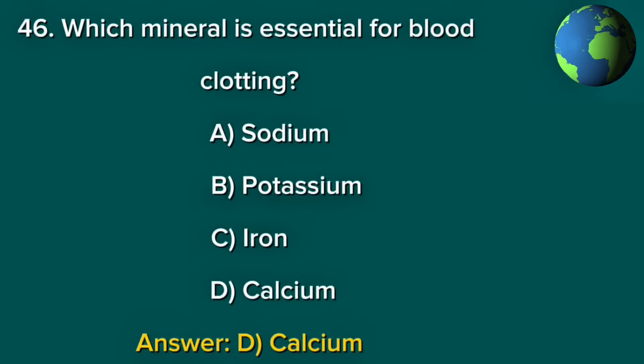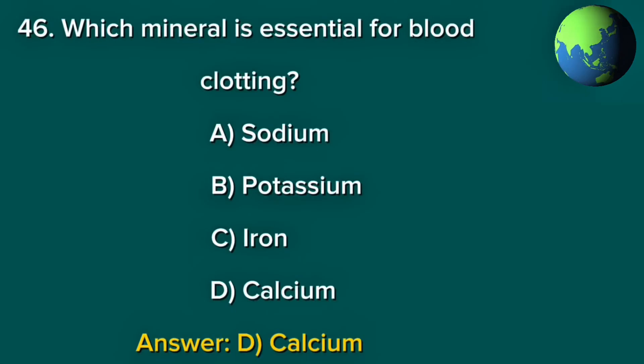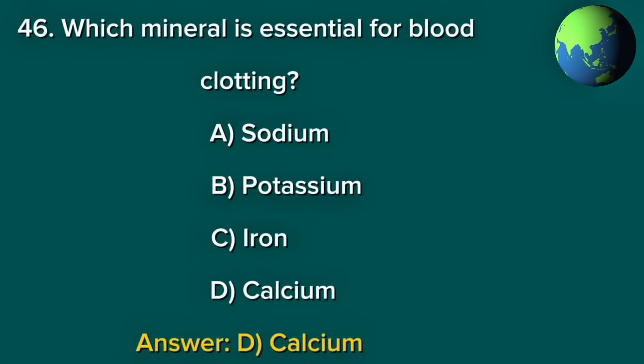Question 46. Which mineral is essential for blood clotting? A. Sodium. B. Potassium. C. Iron. D. Calcium. Answer: D. Calcium.